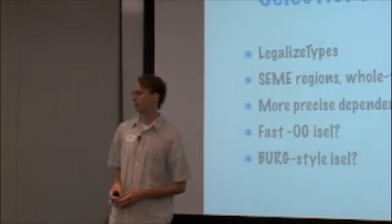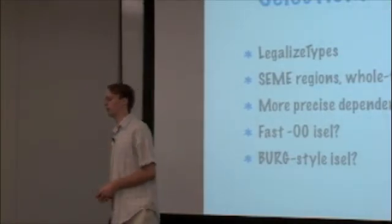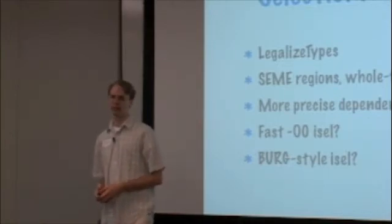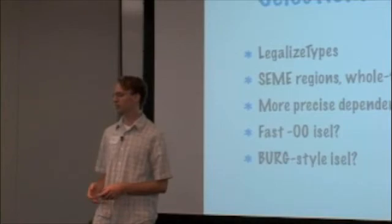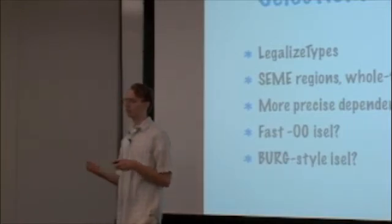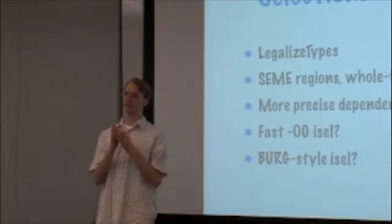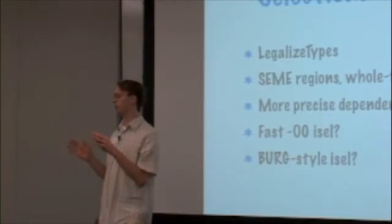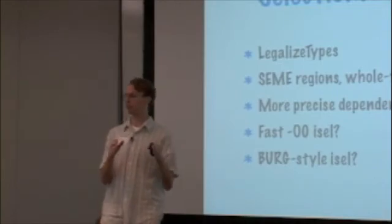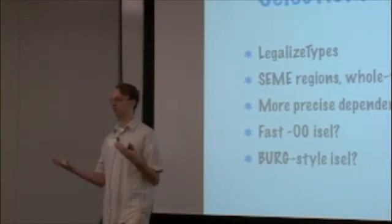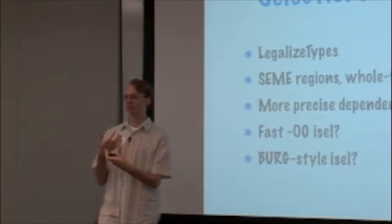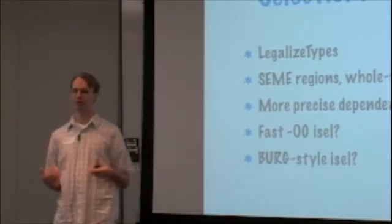So the selection DAG framework is capable of doing a lot of things. We're hoping to make it do a lot more things in the future. Coming very soon is a new legalize types infrastructure that's being worked on by Duncan Sands. What this is going to do is split the current legalize phase into two parts. We're going to legalize types, like the i64, separate from legalizing operations. For example, like a target that does not have an integer divide instruction, but has an alternate sequence that could be done. That's legalizing an operation. That will be split into a separate phase.